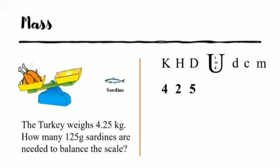We want to get to grams. Grams is under the unit, so we place a zero as a placeholder. Therefore, we can conclude that 4.25 kilograms is equivalent to 4,250 grams.